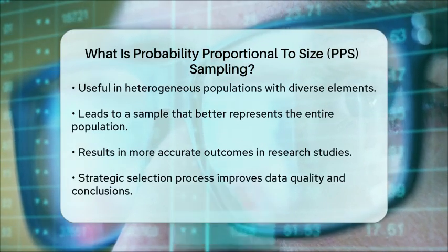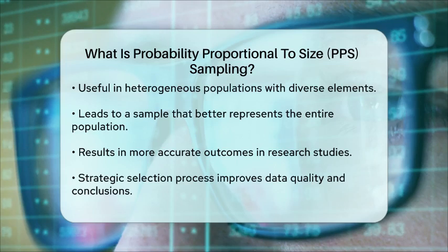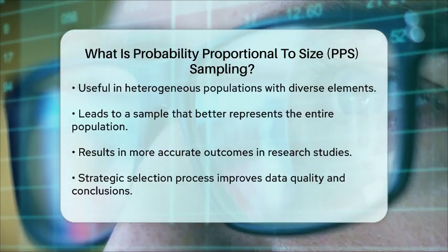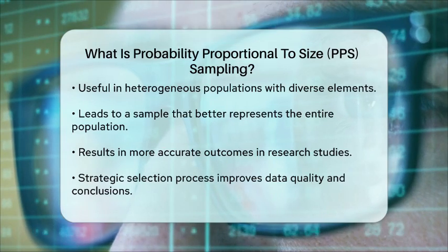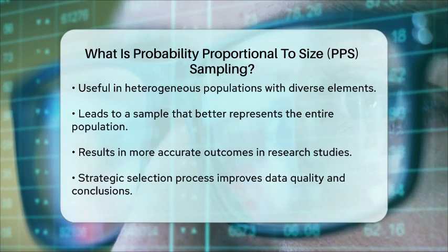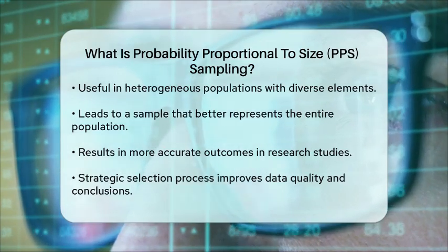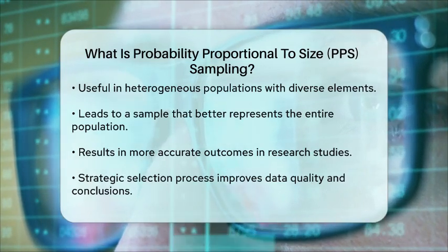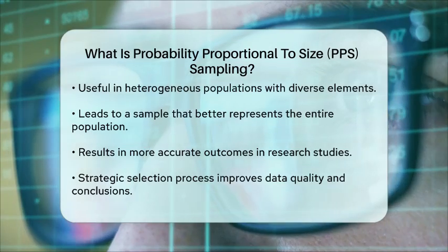In summary, this sampling technique allows for a more strategic selection process, ensuring that larger or more significant units are adequately represented in research studies. By understanding and applying probability proportional to size sampling, researchers can improve the quality of their data and the conclusions drawn from it.